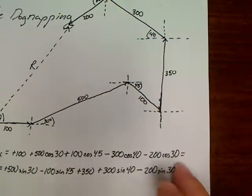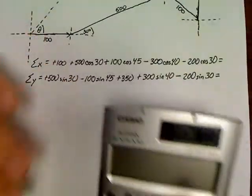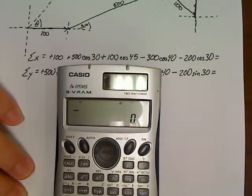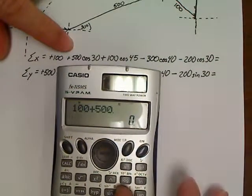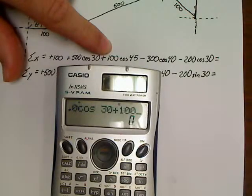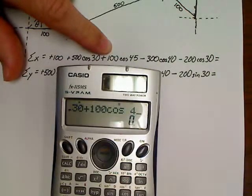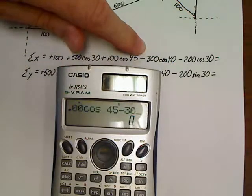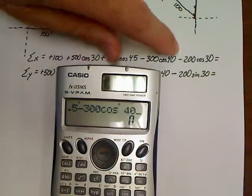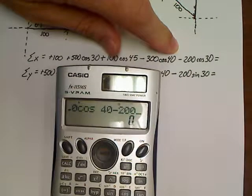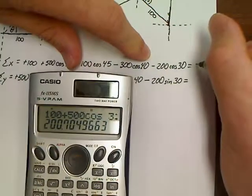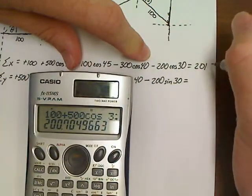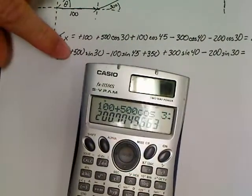Finally, we can put these in our calculators. So we've got for the x, 100 plus 500 cosine 30 plus 100 cosine 45 minus 300 cosine 40 minus 200 cosine 30. We even took it a second. 200.7, so we'll say 201.